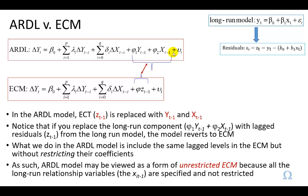In comparison with the error correction model, we find that in the ARDL model, the Z(t-1) — which is the lagged error correction term in the error correction model — is replaced with these lagged values of the dependent and explanatory variables. If you replace the long-run components with the lagged residuals extracted from running the long-run model, and lag those residuals, the model reverts to the error correction model. What we do in the ARDL model is include the same lagged levels as in the error correction model but without restricting their coefficients. As such, the ARDL model may be viewed as a form of unrestricted error correction model, because all the long-run relationship variables are completely specified and not restricted.